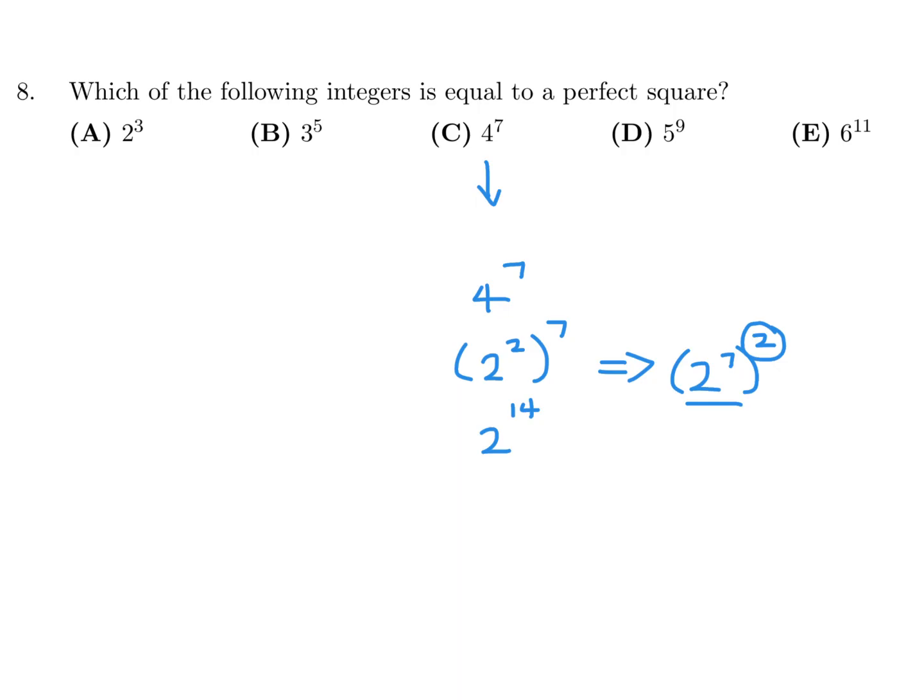And therefore, it's a perfect square. It's just another way of writing it. But this is for sure a perfect square since the exponent is even. And therefore, the answer would be C.